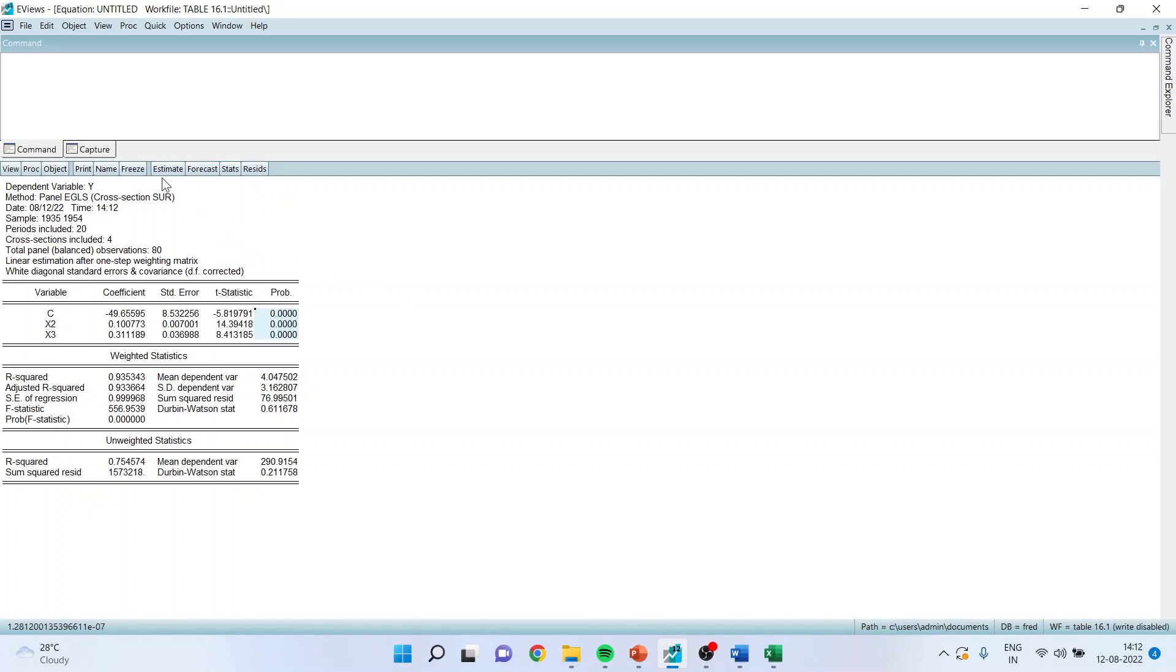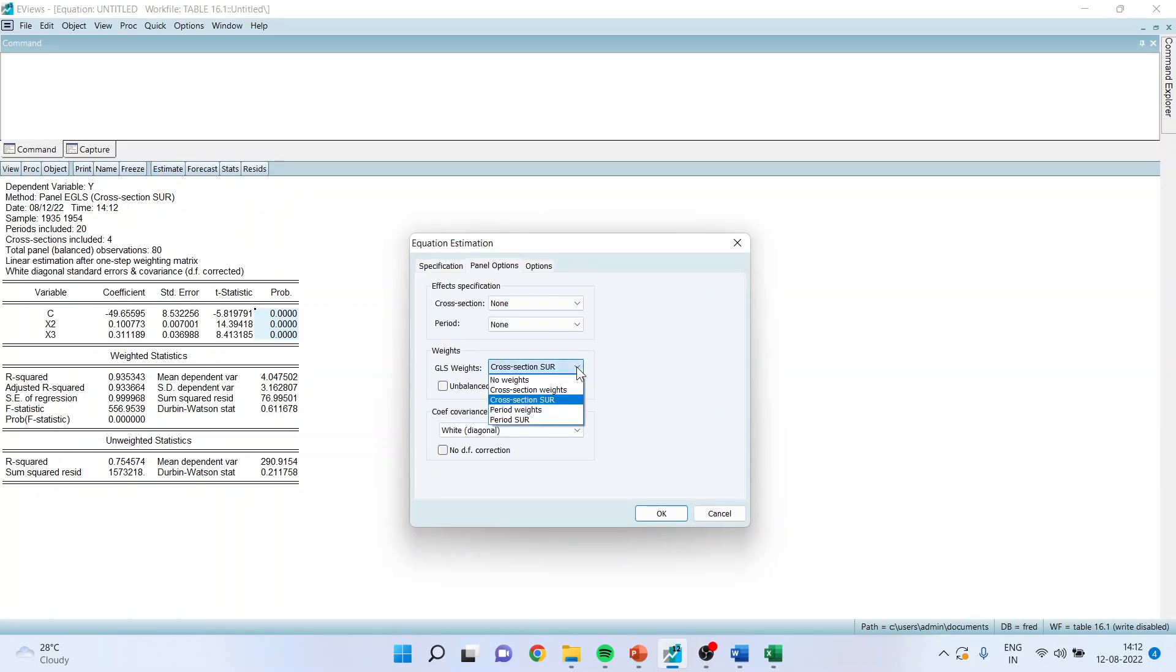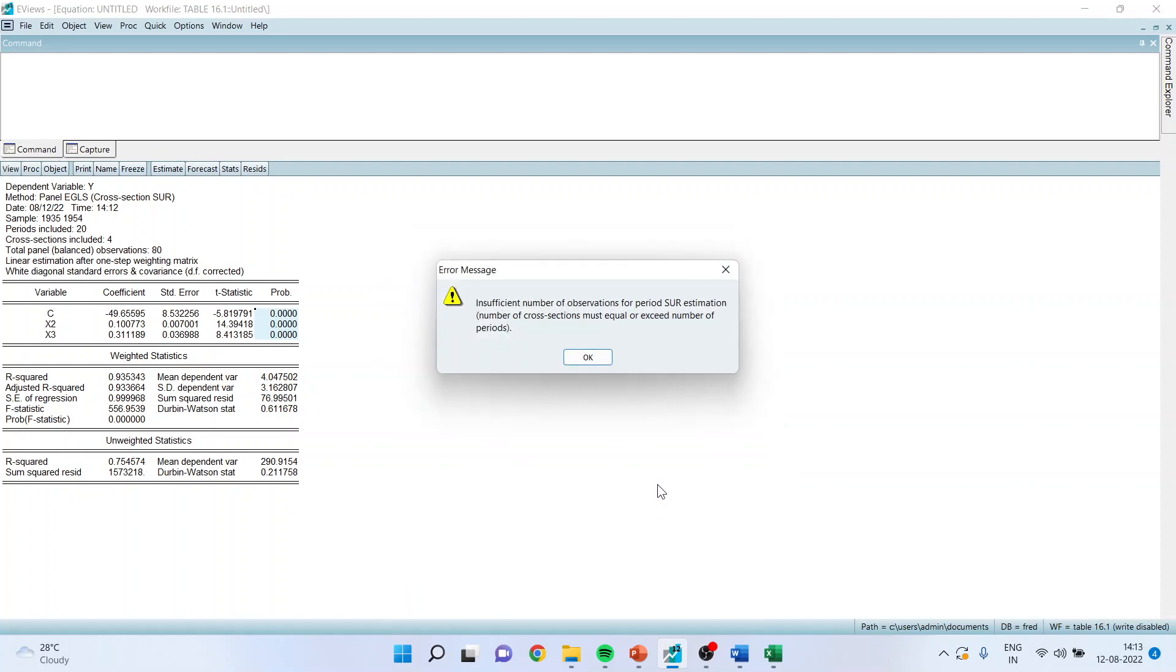Now how to run period SUR. I will go here and estimate panel options, activate the period seemingly unrelated regressions. Click OK. Here it is giving me a warning.